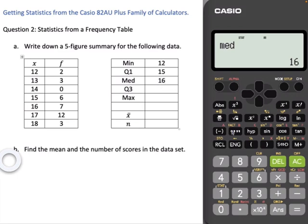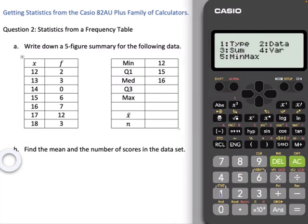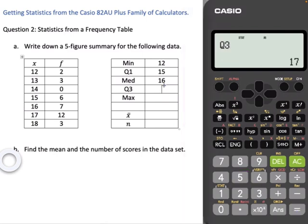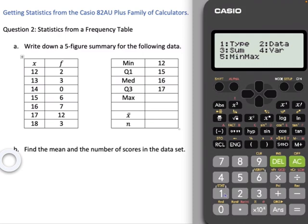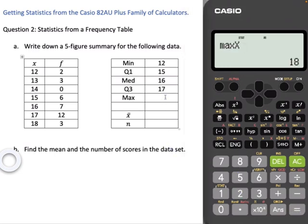And Q3, so Shift, Stat, 5 for MinMax, equals, Q3 is Option 5, equals 17. And the maximum, we know it's 18, but let's just make sure we haven't made a mistake somewhere along the line. So 5, Max is Option 2 up there. So 2 equals 18. Yep, that checks out nicely.